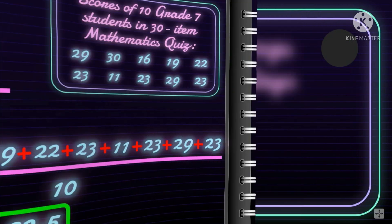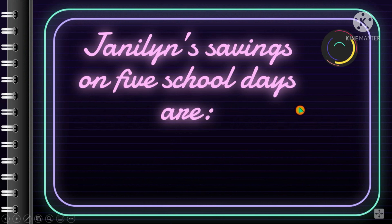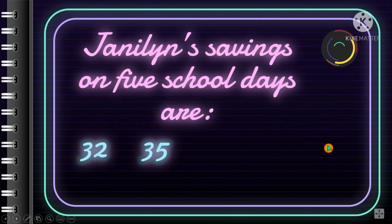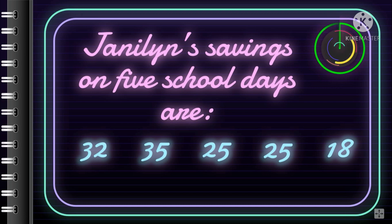Let's proceed with the following: Janeline's savings on five school days are as follows — 32, 35, 25, 25, and 18. Compute for the mean. The answer is 27.